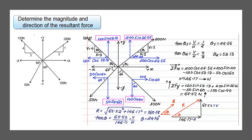The first step in solving concurrent system of forces problems is to resolve the inclined forces into horizontal and vertical components. All four forces here are inclined. The 100 N inclination is given with respect to the vertical; the 50 N inclination is given with respect to the horizontal. The 200 N and 120 N forces do not have their angle given directly — instead, the slope of the force is given: slope of 200 N is 1:2 and slope of 120 N is 4:3. From this slope you need to calculate the angle.